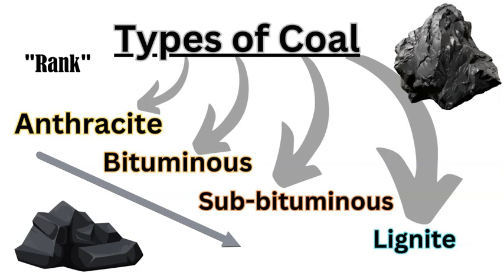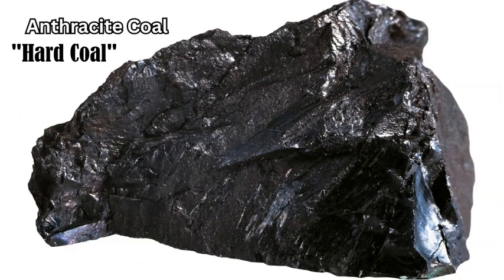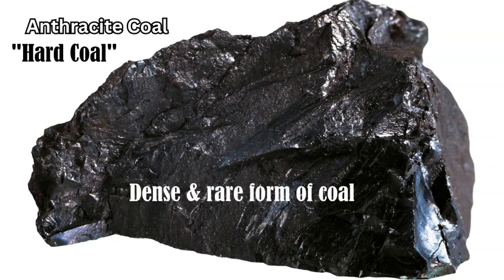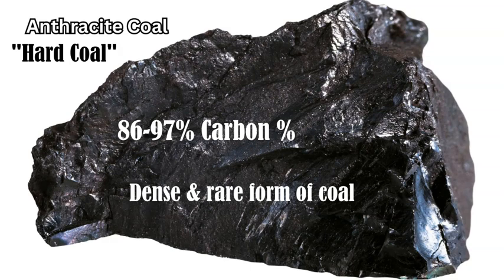The main four types are anthracite, bituminous, sub-bituminous, and lignite. Our first type of coal is the most dense, with the highest amount of energy when you burn it and the least smoke. It's also very hard to find compared to the other three types. This is anthracite coal. It has between 86 to 97 percent carbon content, fewer impurities and volatiles.